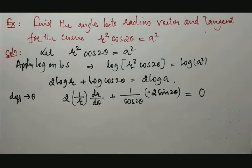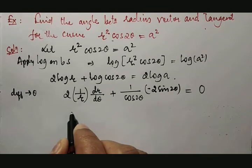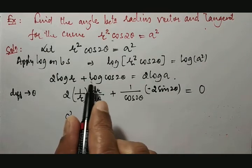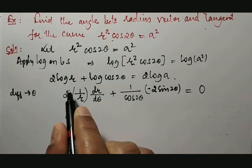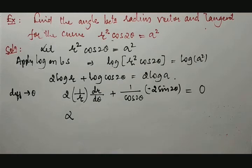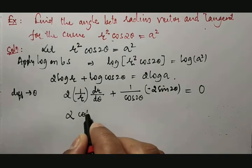Therefore, how can it be written? I will take 2 out. We know that 1/r × dr/dθ is nothing but cot φ. So this is cot φ.